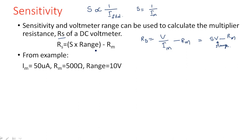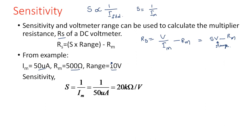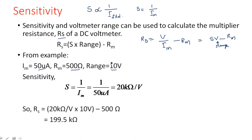For example, using IM = 50 µA, RM = 500 Ω, and range = 10 volts — the same values as before. First calculate sensitivity: S = 1/IM = 1/(50 × 10⁻⁶) = 20 kΩ/V. The unit 1/ampere can be written as ohm per volt. Then RS = S × range − RM = 20 kΩ/V × 10 V − 500 Ω = 199.5 kΩ — the same answer as before.